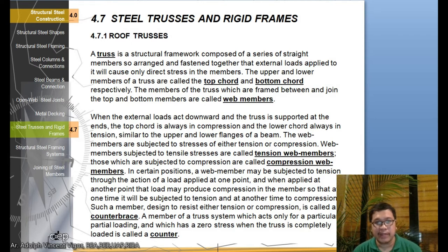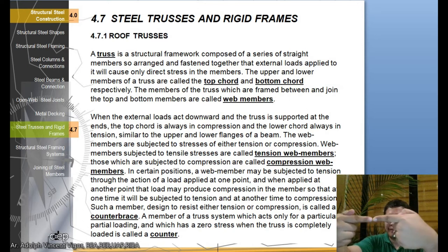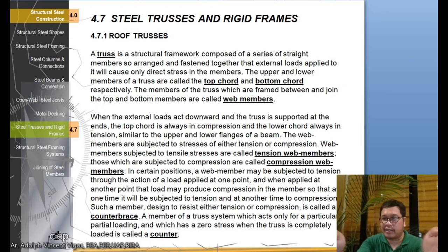When the external loads act downward and the truss is supported at the ends, the top chord is always in compression and the lower chord always in tension, similar to the upper and lower flanges of a beam. The web members are subjected to stresses of either tension or compression. Tension is the force which goes in opposite directions, compression is like being compressed. Web members subjected to tensile stresses are called tension web members, those subjected to compression are called compression web members.